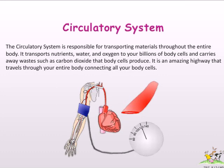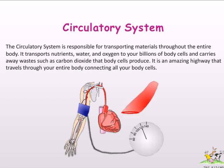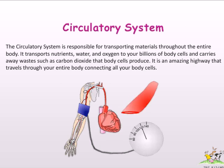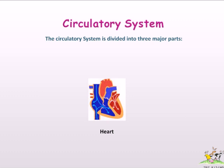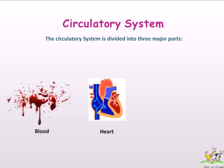The circulatory system is responsible for transporting materials throughout the entire body. It transports nutrients, water, and oxygen to your billions of body cells and carries away waste such as carbon dioxide that body cells produce. It is an amazing highway that travels through your entire body, connecting all your body cells. The circulatory system is divided into three major parts: heart, blood, and blood vessels.